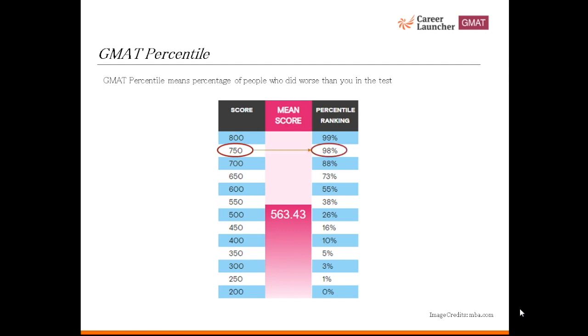This chart compares different GMAT scores to a percentile rank. A score of 750 will take you to the 98th percentile, which is a very good place to be.